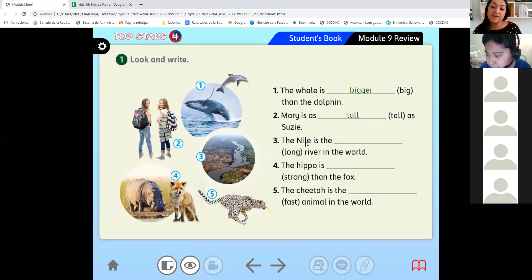'Number three: The Nile is the longest. When they end in EST, we are saying in Spanish, the longest in the world. Number four: The hippo is stronger than the fox. Very good. The cheetah is the fastest in the world. The superlative is EST. Please copy your answers.'